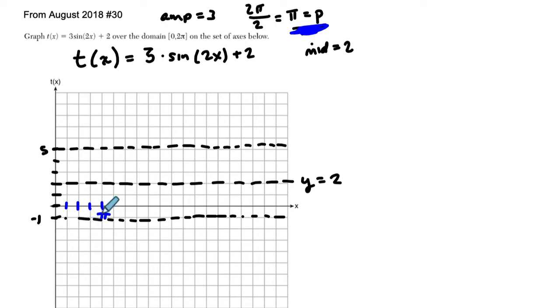So instead of a 2 pi, I put a pi. And then in the middle instead of pi, it's now pi over 2. And this is going to be pi over 4. And this is going to be 3 pi over 4 here.